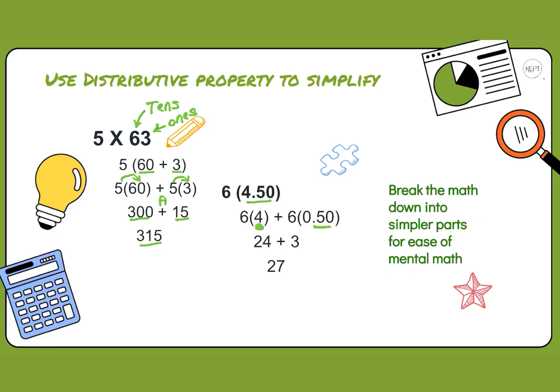The dollars portion is this 4 here, and the cents portion is this 0.50. When we do distributive property, that just means multiplication. 6 times 4 is 24. 6 times 0.50 is 3. When we add those together, which is our last operation, we get 27.